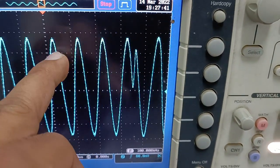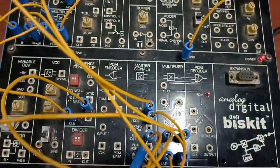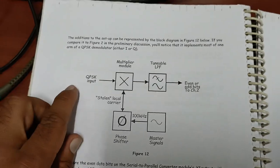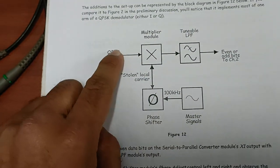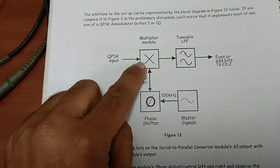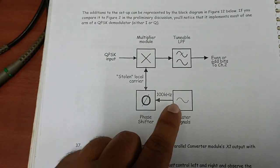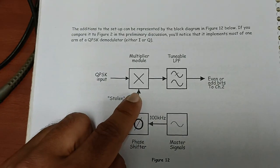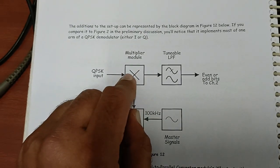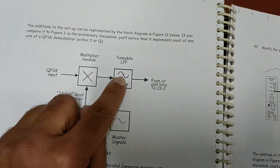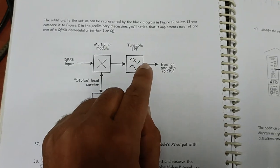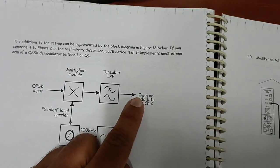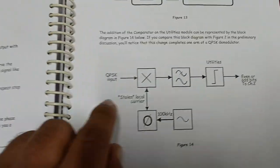This is the QPSK modulated signal. Now for the second part of the experiment — demodulation of the QPSK signal. The QPSK input is fed to a multiplier detector, where we multiply it by the same carrier frequency used during modulation to synchronize frequency and phase. After the multiplier detector, the signal passes through a tunable low-pass filter, and then a comparator is used to correct any distortion introduced by the filter.